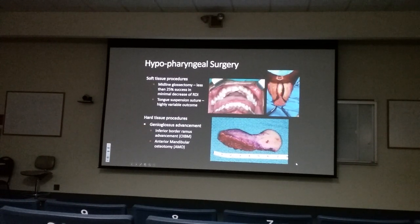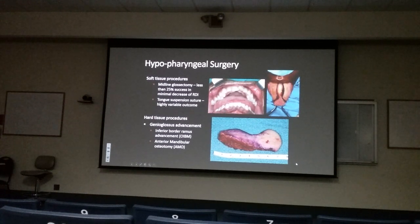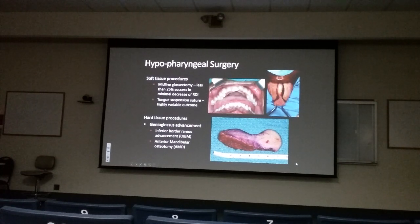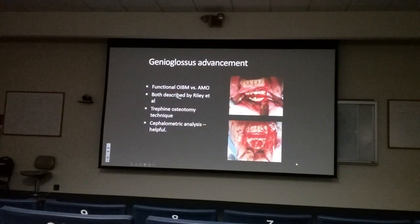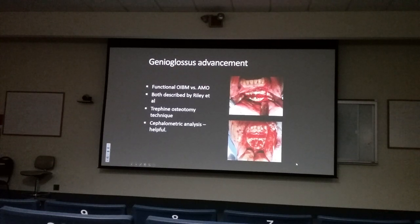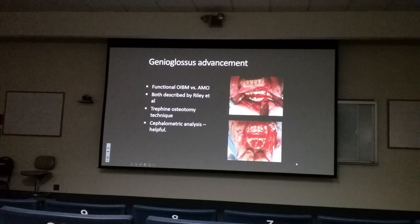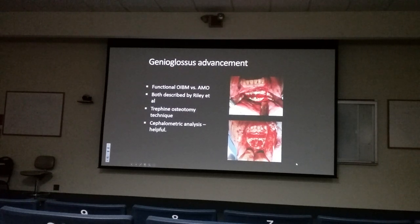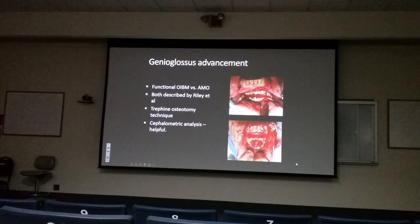Hard tissue procedures now dominate surgical treatment. When UPPP is combined with genioglossus advancement, the success rate dramatically increases. By moving the chin forward, you advance the genioglossus muscle attachment on the mandible, keeping the tongue forward even during sleep — relieving the obstruction. This is essentially what a mandibular positioning device does non-surgically, but achieved surgically.